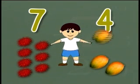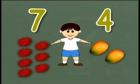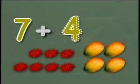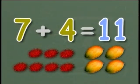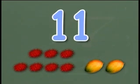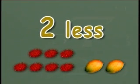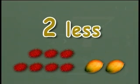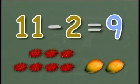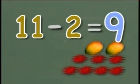He eats 2 mangoes. How many fruits are left? First, we will find the total number of fruits he has. The number sentence for this would be 7 plus 4 equals 11. Hassan has 11 fruits. Now, if he eats 2 mangoes, that means he will have 2 less fruits. So the number sentence would be 11 take away 2 equals 9. Hassan has 9 fruits left.